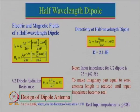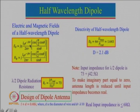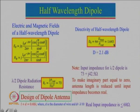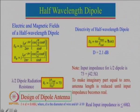Now let us talk about the half-wavelength dipole. For a half-wavelength dipole we follow the same process: find the vector magnetic potential, integrate over the length, and from that find the far field pattern. The directivity of the dipole antenna for half-wavelength is numerically about 1.643, which equals 2.1 dB. For a very small dipole antenna, D₀ equals 1.5. So as dipole length increases from small to λ/2, directivity goes from 1.5 to 1.643, or 2.1 dB.